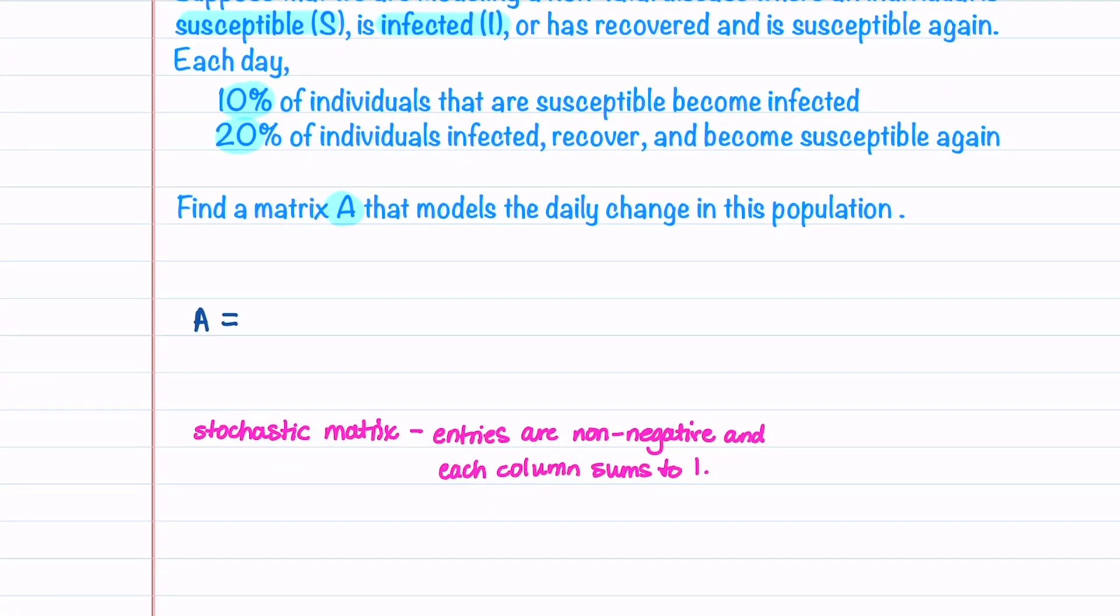Let's see how to find a transition matrix A that models the daily change in this population. Since individuals are either susceptible or infected, let's label the first and second columns with S and I, and the rows with S and I. 10% of susceptible individuals become infected, so we put 0.1 in that entry, and 20% of infected individuals recover and become susceptible, so we have 0.2 in this entry.